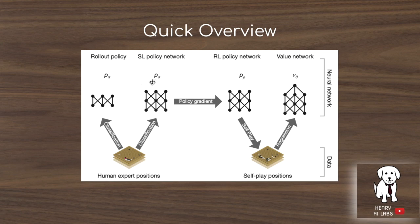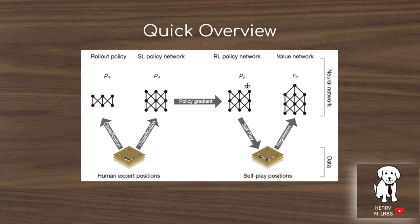The supervised learning policy network initializes the reinforcement learning policy network, which is then trained by playing against itself and updating its parameters using policy gradients to increase moves that lead to wins against previous iterations of itself. From this self-play, they construct a dataset used to train the value network. The reinforcement learning policy network isn't used directly in AlphaGo at the end — it's only used to construct the dataset for training the value network, which predicts winning probability from given states.